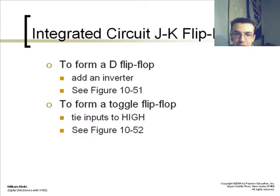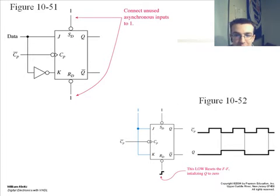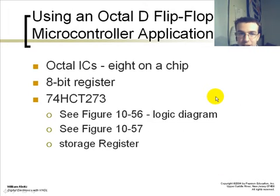To form a D flip-flop from a J and K flip-flop you can add an inverter or to form a toggle flip-flop to tie the inputs to high as shown here. With your D line with an inverter and your J and K connected to a logic level 1 high to create that form.